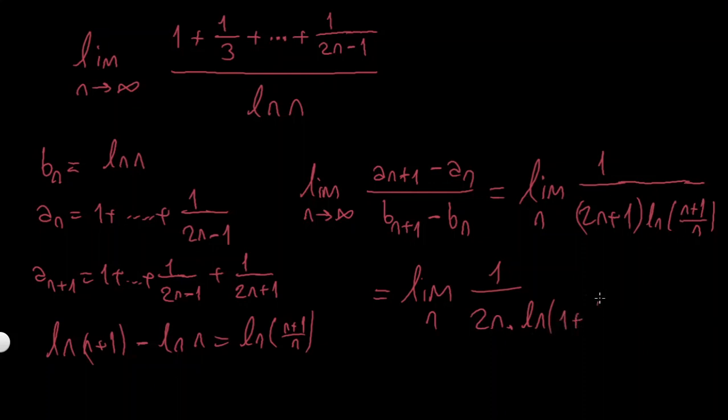and so I can keep this like this, and I have plus 1 more, so it's going to be ln(1 plus 1 over n).